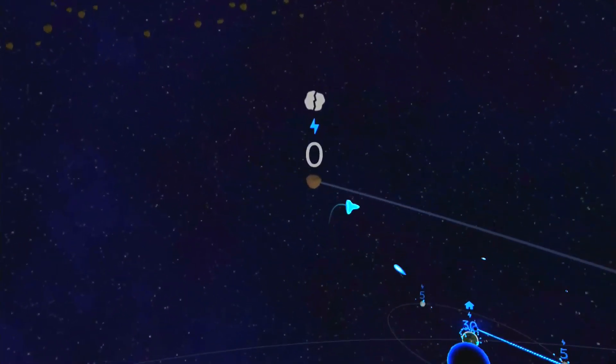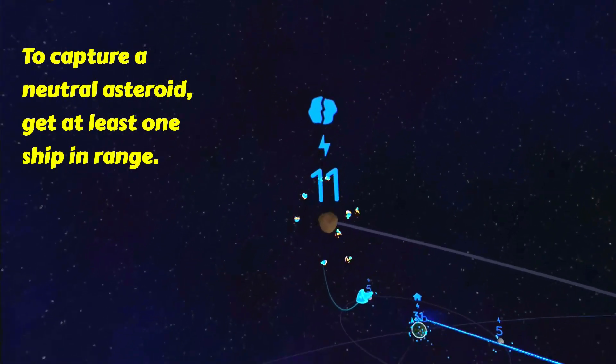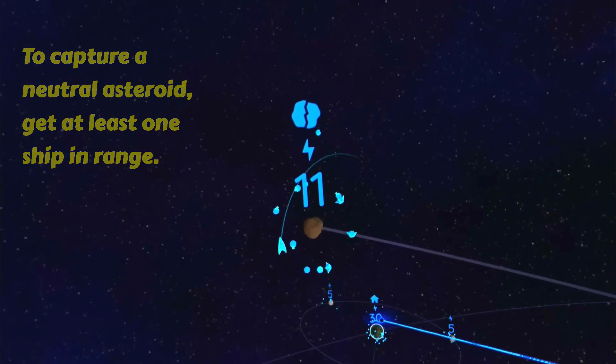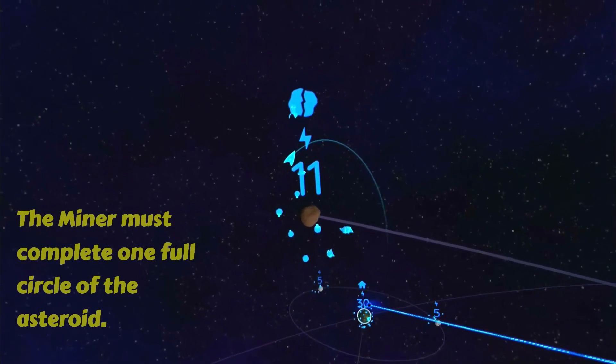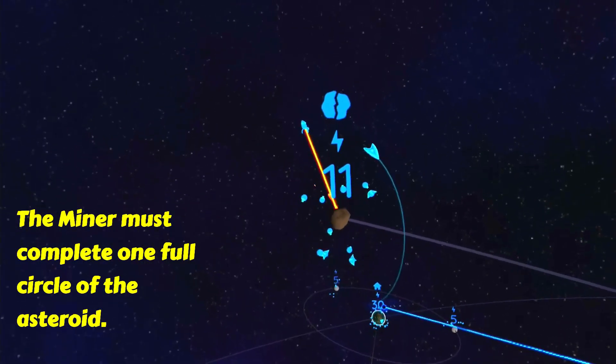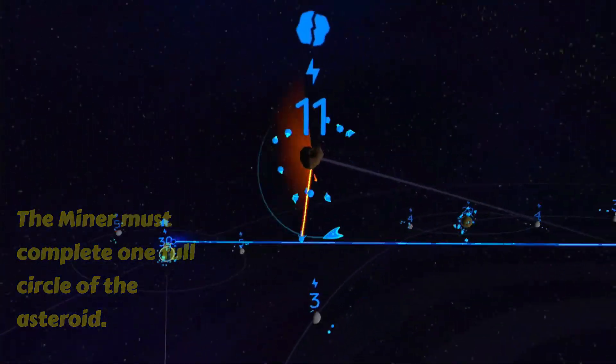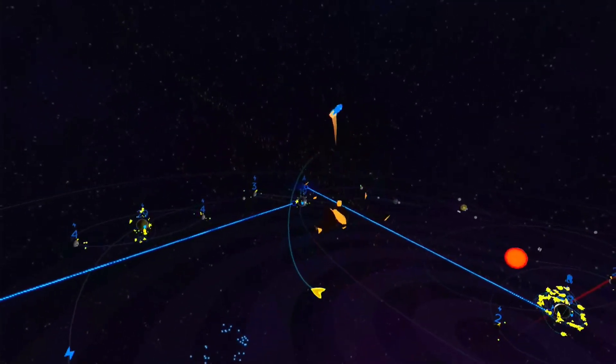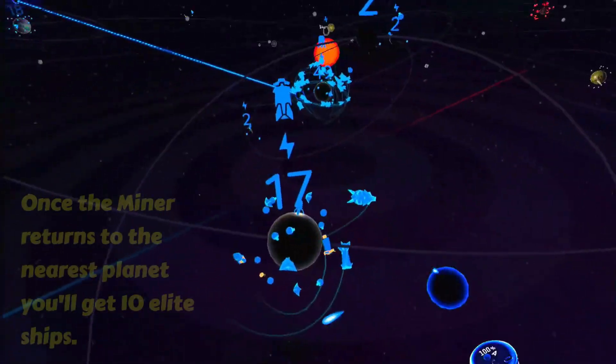Mining an asteroid is simple. You just have to get one of your ships to it. Once you've captured it, a miner will be sent out. It takes one complete rotation of the miner before it can head back to the nearest planet to deliver its special cargo. Once it gets to the nearest planet, you will immediately get 10 elite ships.